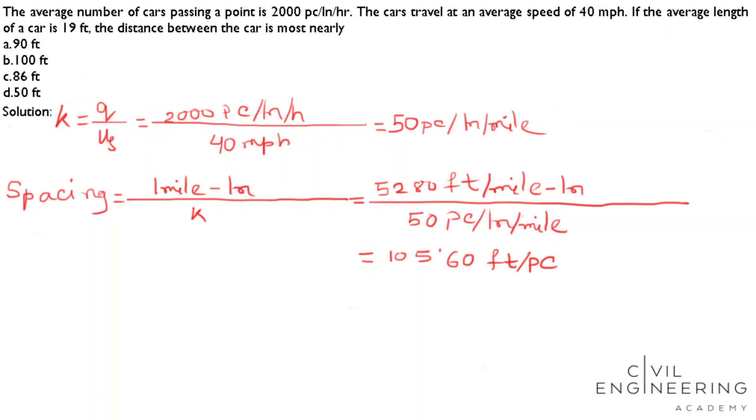Now you have to calculate distance. If I denote distance d, d equals our spacing 105.60 feet minus the car length 19 feet. So I get the value 86.60 feet. So our answer is C, 86 feet. Thank you.